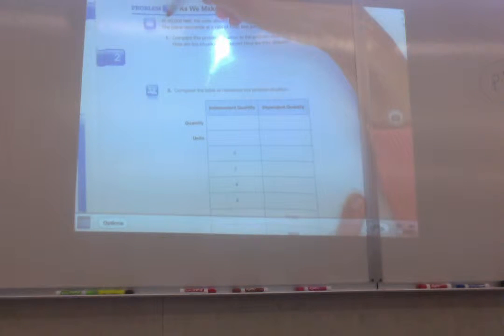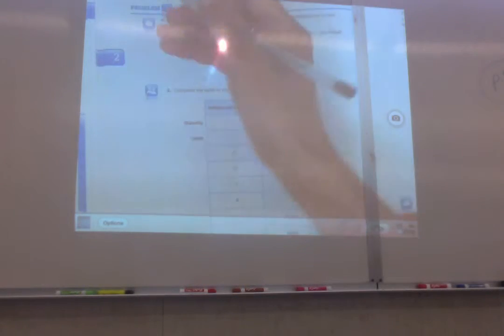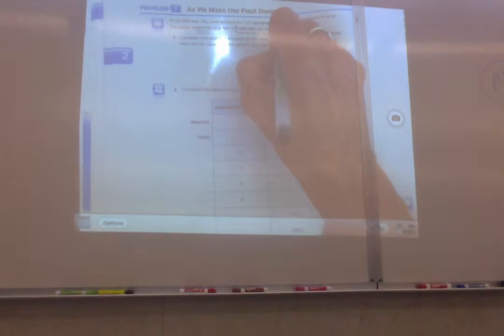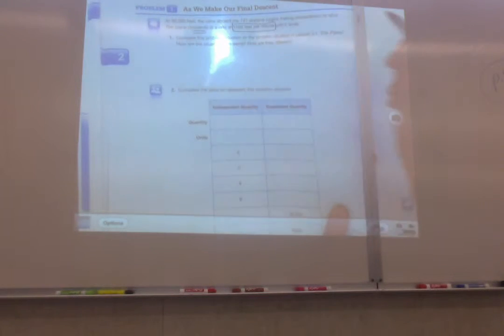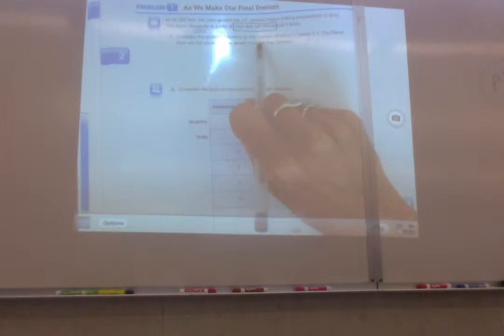At 36,000 feet, the crew aboard a 747 airplane begins making preparations to land. The plane descends, underline that word, at a rate of 1,500 feet per minute until it lands. Compare this problem situation to the problem situation in lesson 2.1. How are the situations the same? How are they different?